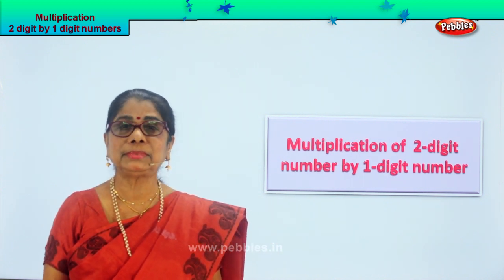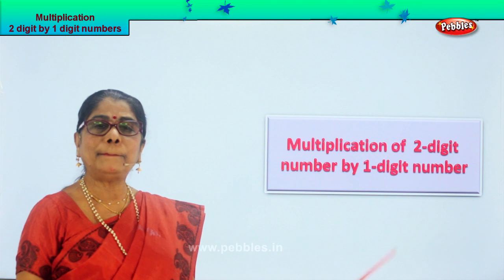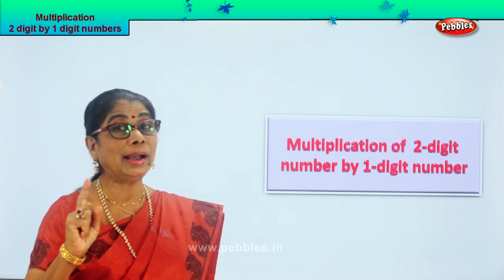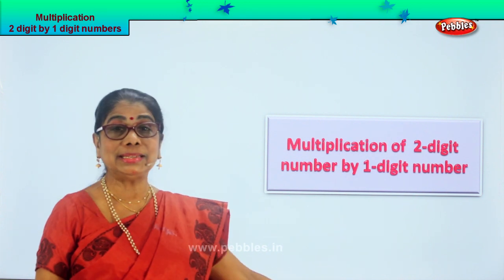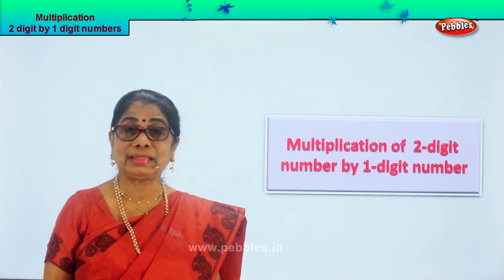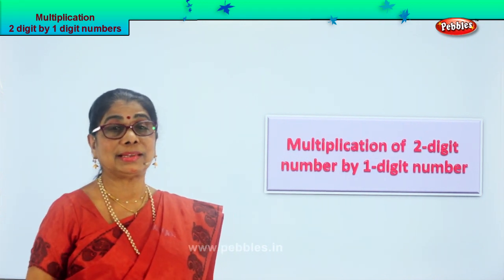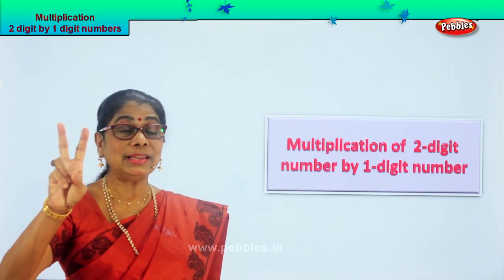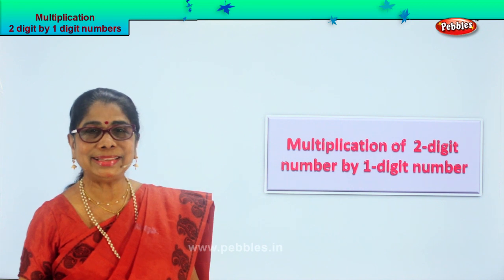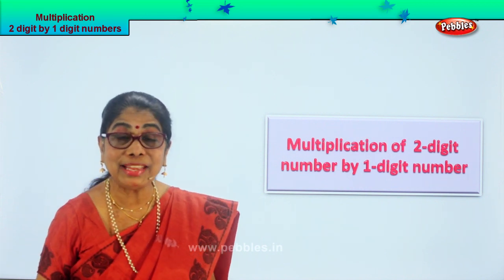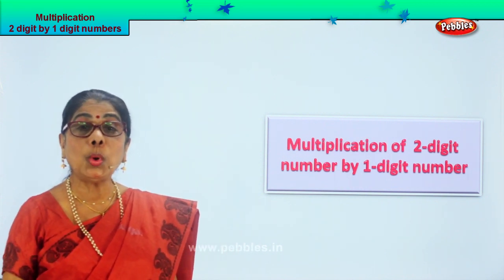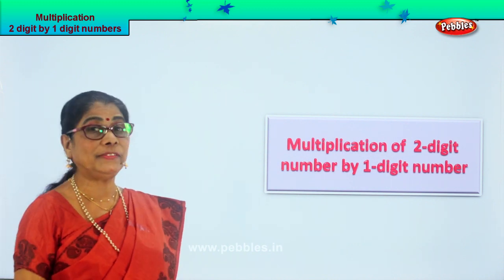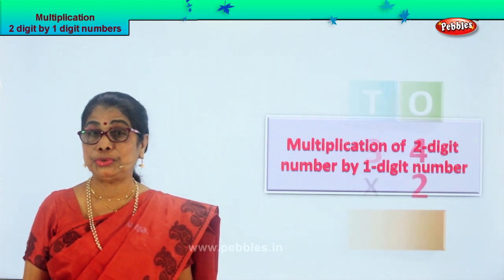Hi children, let's do multiplication of a two-digit number by a one-digit number. You are going to enjoy this exercise. We are going to learn how to multiply when you get two digits by one digit. Let's look at it carefully and enjoy working multiplication — two digits by one digit. Look at the first sum that's given to you.